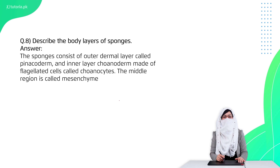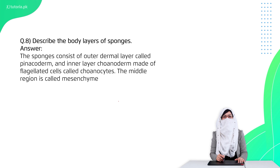Question 8 is: describe the body layers of sponges. In sponges, there are three body layers: the outer layer, the inner layer, and a middle region called mesenchyme, which contains amoeboid cells.